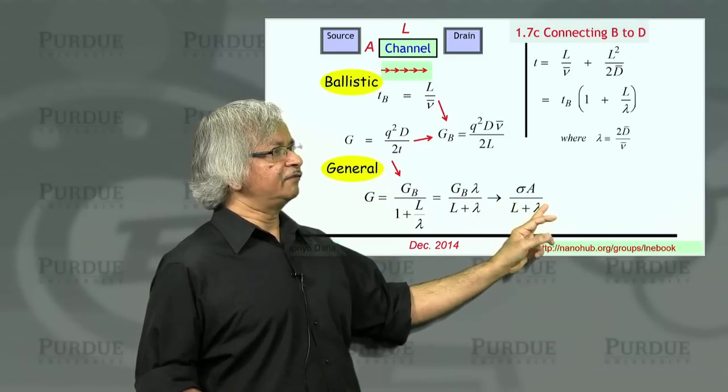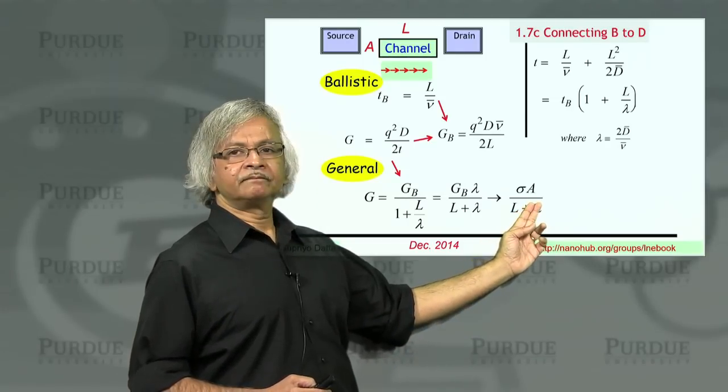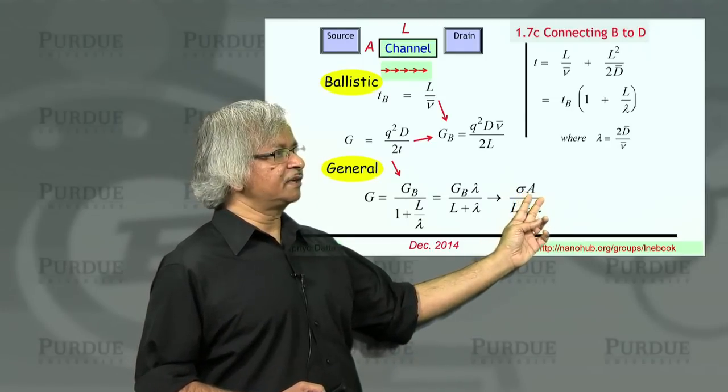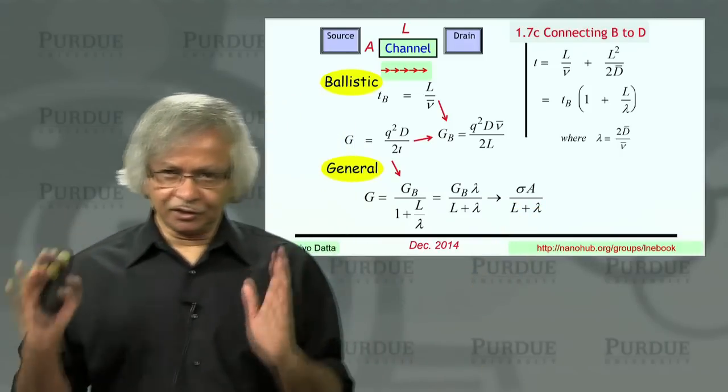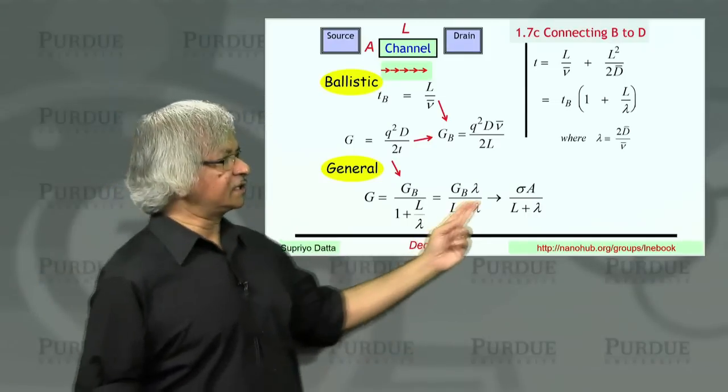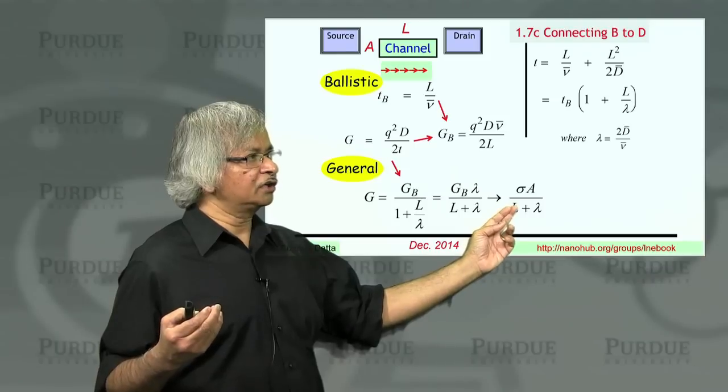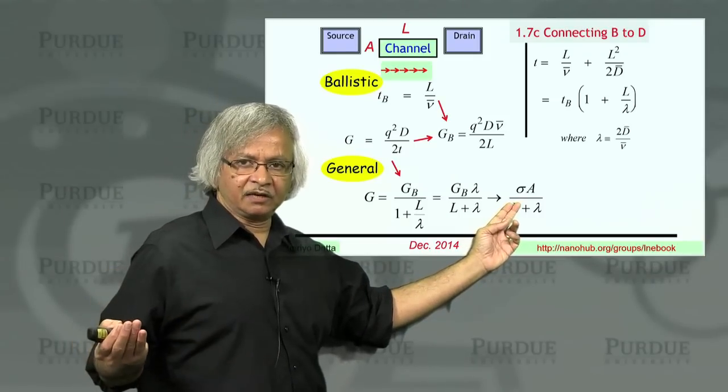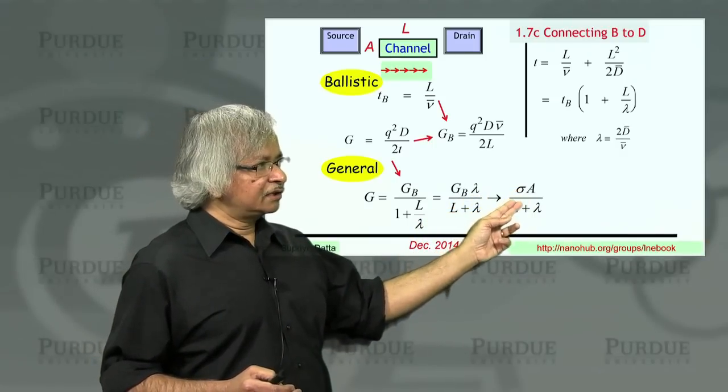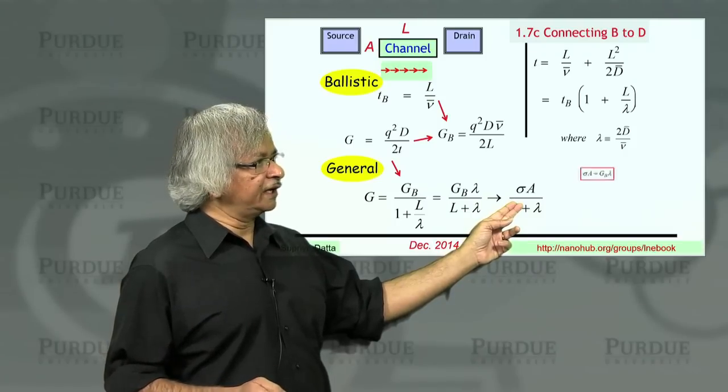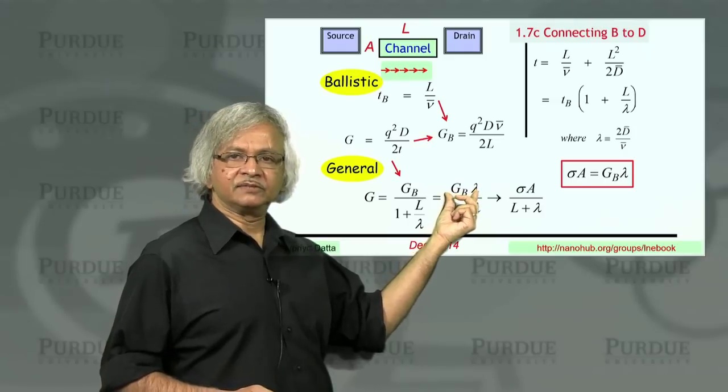Note that if I have a very long channel, then I can drop the lambda from here. The conductance will be sigma A over L, just like you learn in freshman physics, what it should be Ohm's law for large conductors. But when length gets really short, the point is the resistance doesn't become zero. Conductance doesn't become infinity. It tends to some constant value.